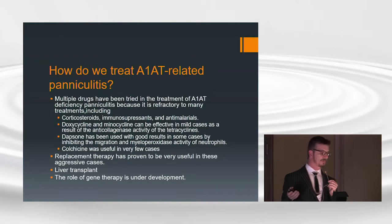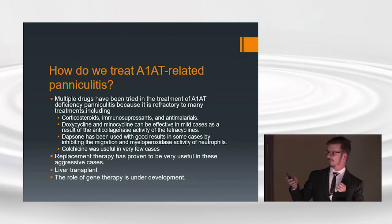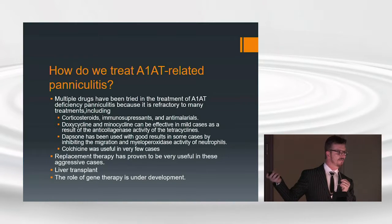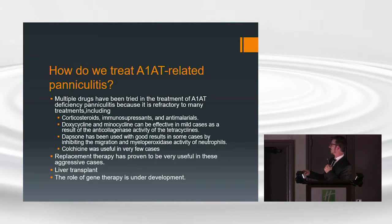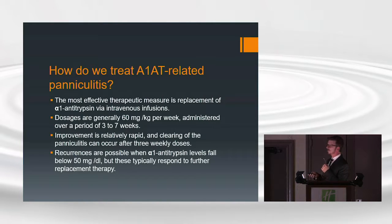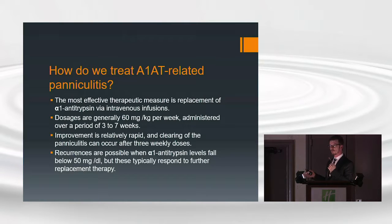There is a pretty extensive list of medications, but the best one for mild disease is dapsone or colchicine. Of course, replacement therapy has proven to resolve the cases I showed. Liver transplant is also an option, and gene therapy eventually. The most effective measure is replacement therapy. The dose is established, and usually after the third infusion patients start healing very very nicely and rapidly if you made the right diagnosis.